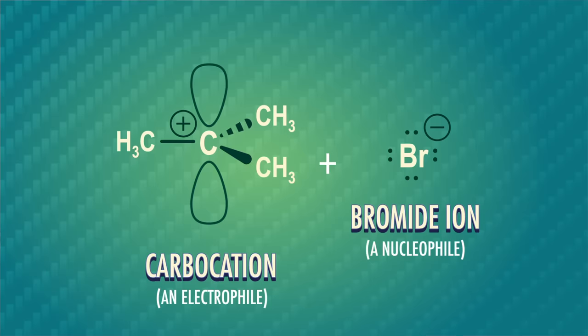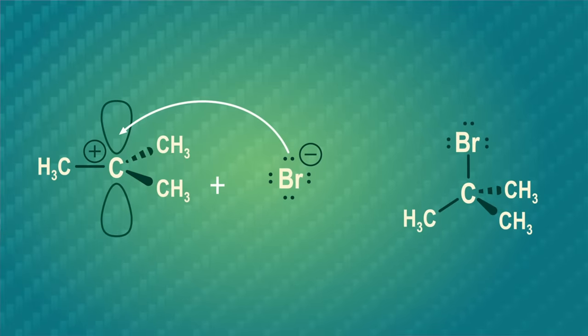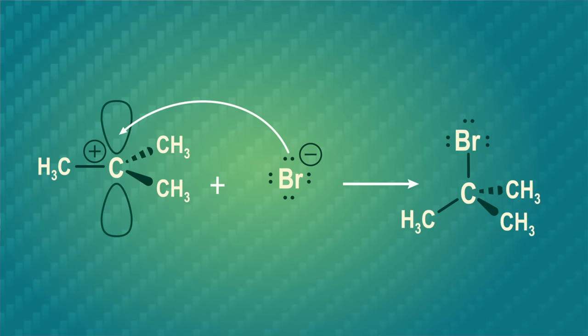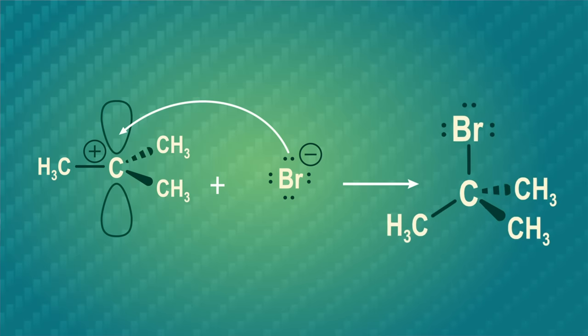When our bromide ion sees the carbocation's empty orbital, the nucleophile attacks the electrophile and donates a pair of electrons. Using the symbols we've learned, we show that electron movement with a regular curved arrowhead. That makes a bond, which creates a neutral molecule as the product. To show that it's our next and final stop in this reaction mechanism, we draw a straight arrow pointing in one direction and the product that's made.